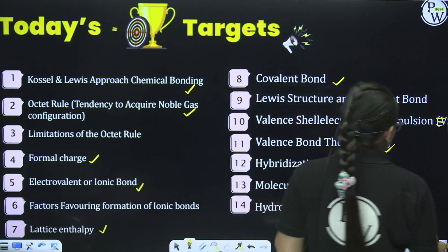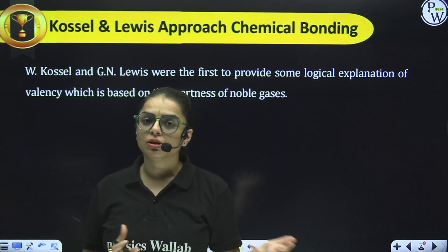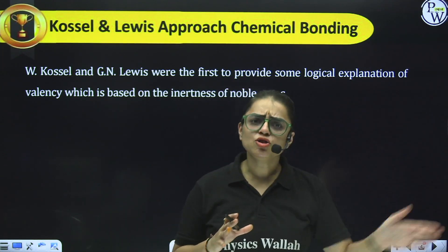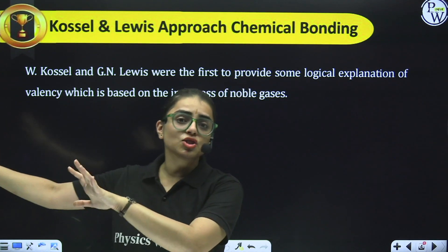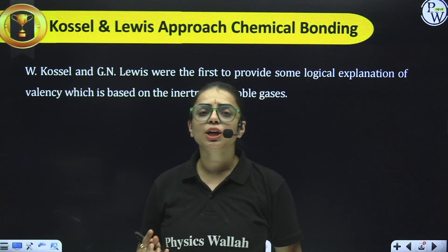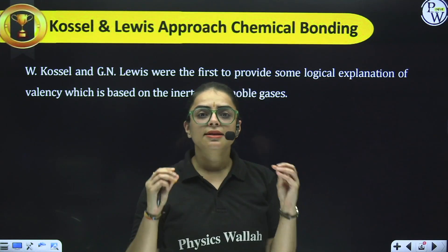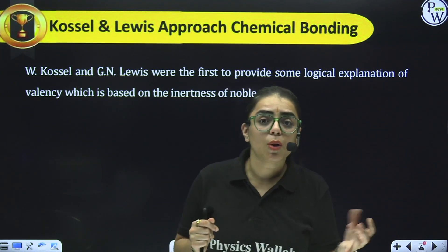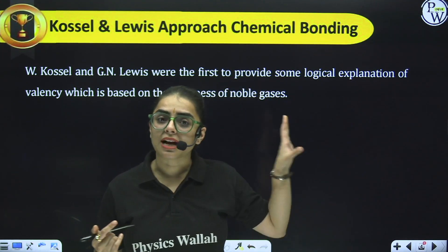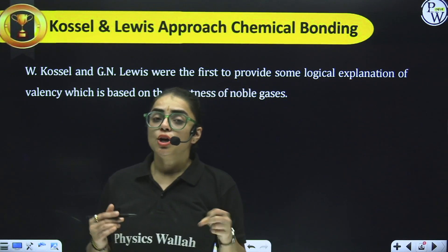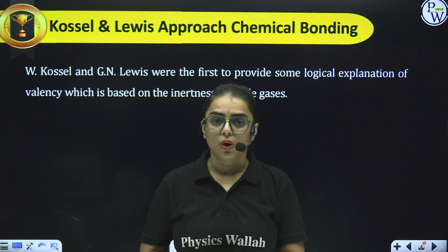Let's start with the initial topic — the Kossel and Lewis approach towards Chemical Bonding. In this session, we will cover the complete chapter as a revision and recap. I guess you all have studied this chapter before, but if not, no need to worry — I will cover each and every concept. You have to prepare summary-type notes which you can read before the exam. We are not practicing questions here — we will understand the concepts, so for practice take out your books and solve questions after the session.